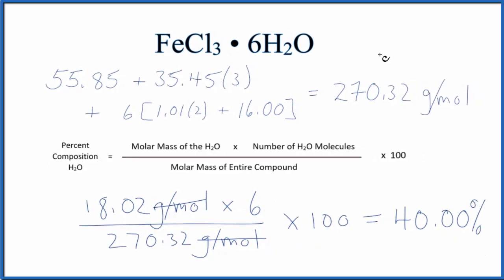What that means is if we had a mass of our iron 3 chloride hexahydrate, 40.00% of that mass would be due to the water.